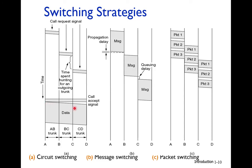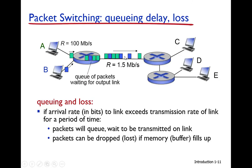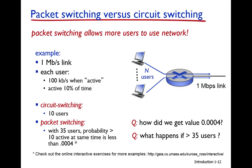In circuit switching there is no queuing delay — it is like a motorway where your travel time depends only on your speed. Packet switching is like the GT road, where your delay depends not only on your speed but also on the traffic and congestion at junctions.